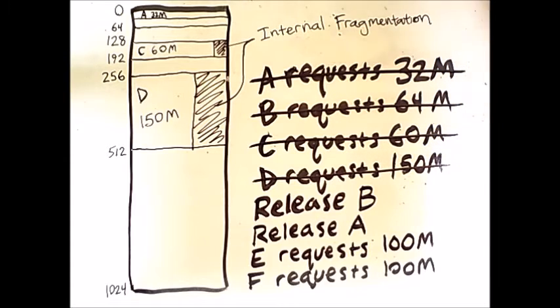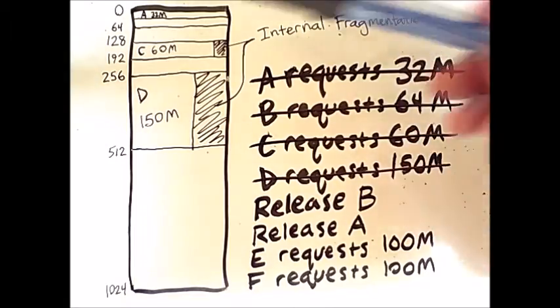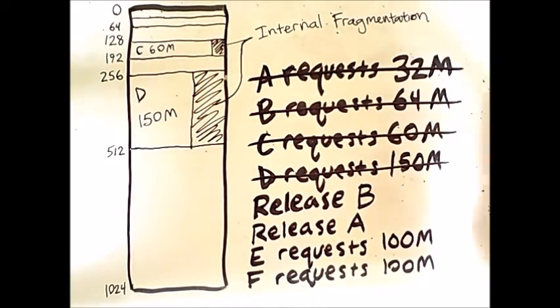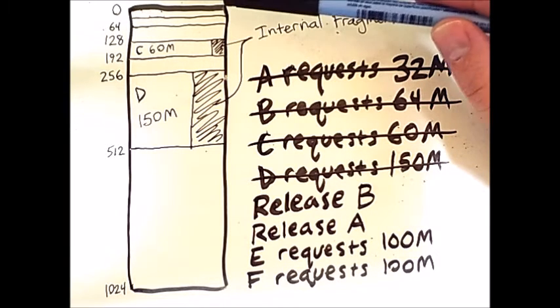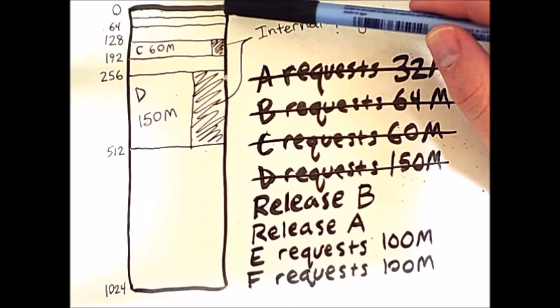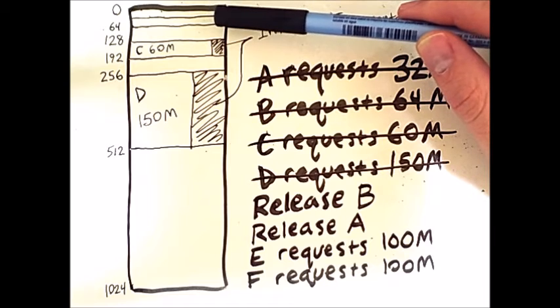However, when we release A, we will first simply remove A from memory, but then we will go further. Now that A is gone, we can actually coalesce the partition that previously contained A with its 32 megabyte buddy.